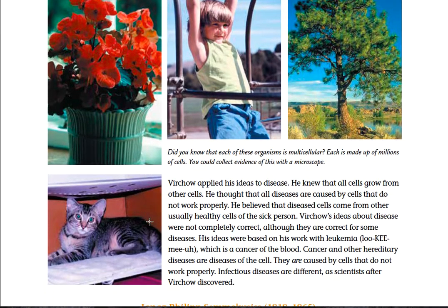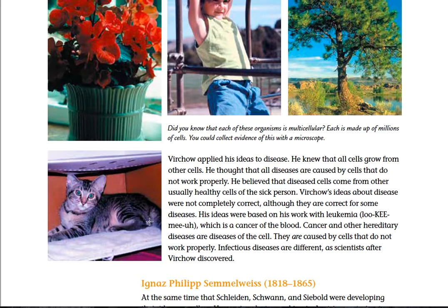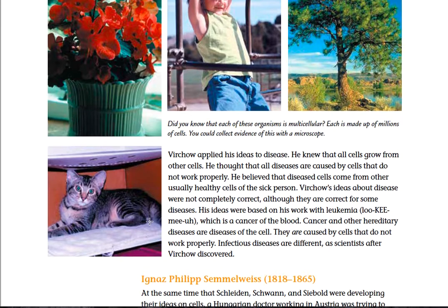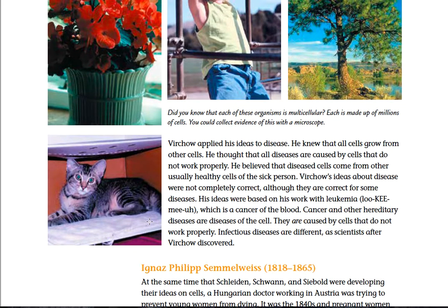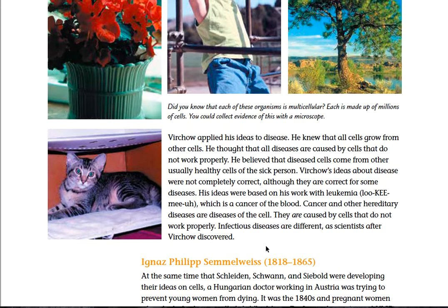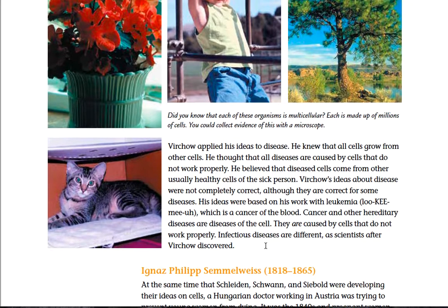Virchow applied his ideas to disease. He knew that all cells grow from other cells, and he thought that all diseases are caused by cells that do not work properly. He believed that disease cells came from other, usually healthy, cells of sick persons. Virchow's ideas about disease were not completely correct, although they are correct for some diseases. His ideas were based on his work with leukemia, a cancer of the blood. Cancer and other hereditary diseases are diseases of the cell — caused by cells that do not work properly. Infectious diseases are different, as scientists after Virchow discovered.